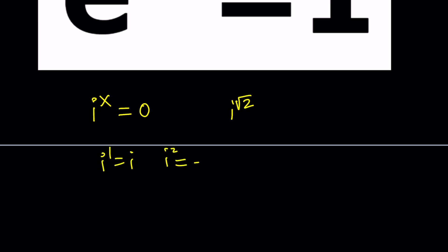Well, we probably know i to the first is i, i to the second is i squared, which is negative 1, i to the third is negative i, and i to the fourth is 1, and then it's a cycle just going to repeat, right? Great. But when do you get 0?